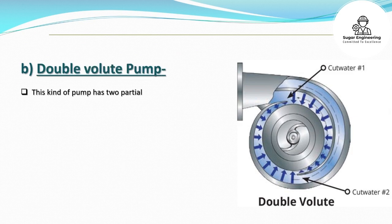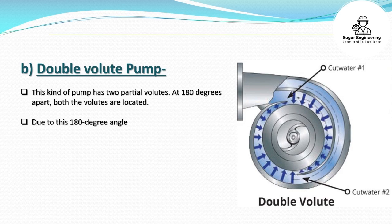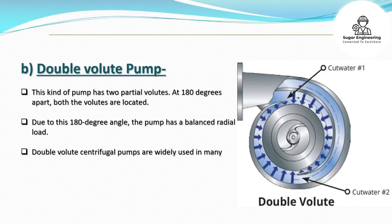B. Double volute pump. This kind of pump has two partial volutes located 180 degrees apart. Due to this 180-degree angle, the pump has a balanced radial load. Double volute centrifugal pumps are widely used in many industries.